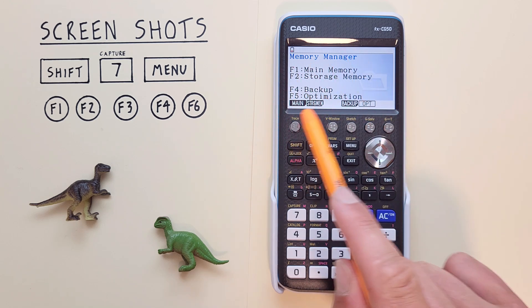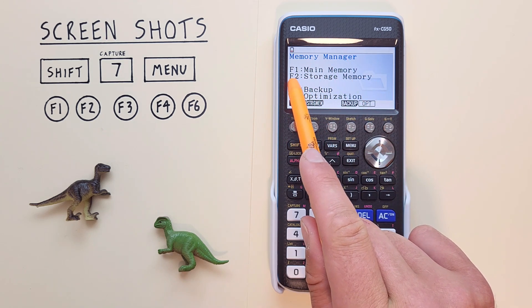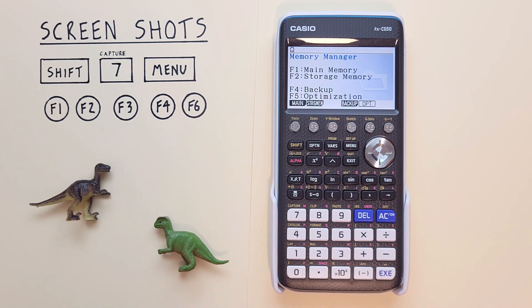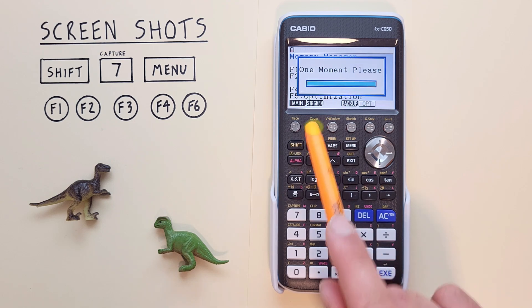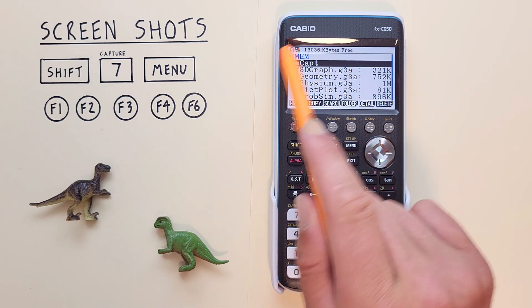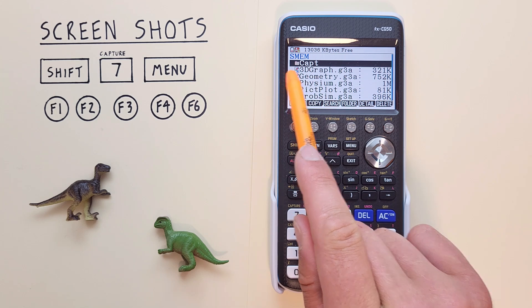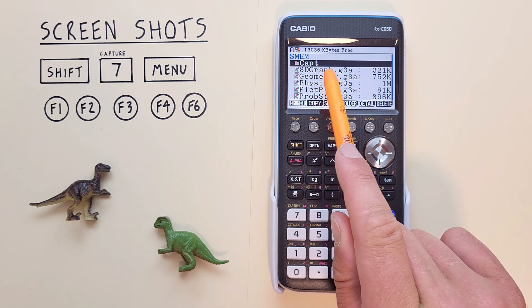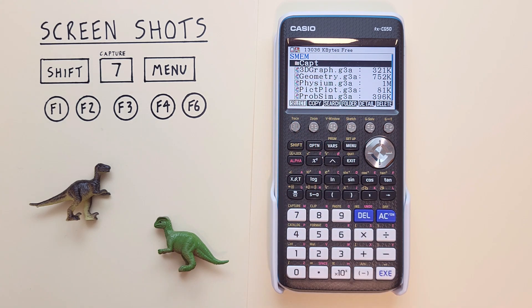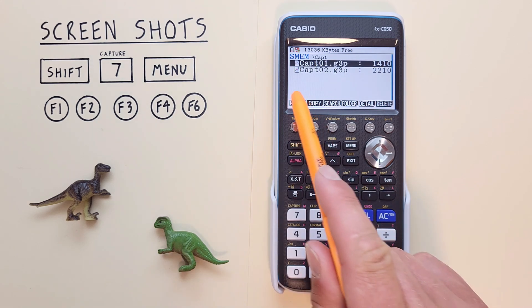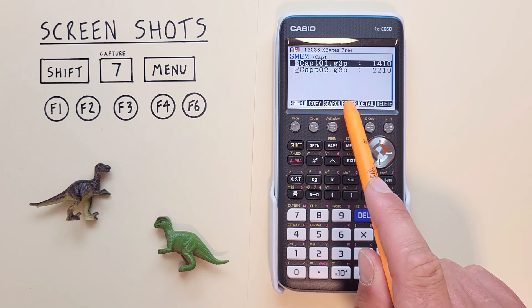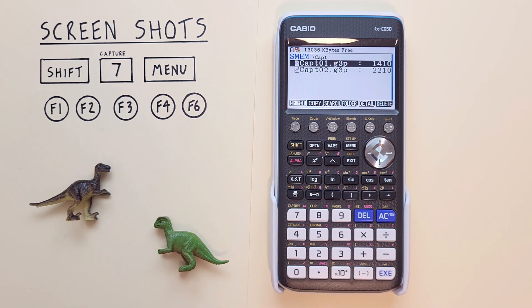That brings us to our memory manager screen. And we want to go to F2, our storage menu. There we go. Here's our storage memory menu. And we see the folder at the top here, C-A-P-T or capture. That's where all our screenshots are stored. So we highlight it and select it with the exe. And now we can see our two screenshots, we have capture one and capture two.